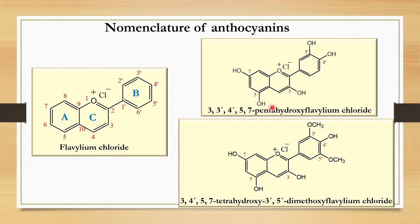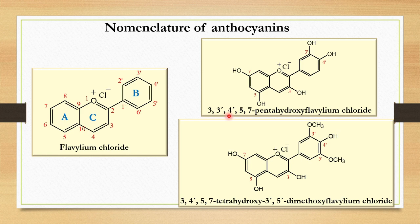If we have different substitutions on these anthocyanins — like five hydroxyl groups — we number them as hydroxyls at the 3, 5, 7, 3-dash, and 4-dash positions, and we name the compound as 3, 3-dash, 4-dash, 5, 7 penta-hydroxy flavylium chloride.